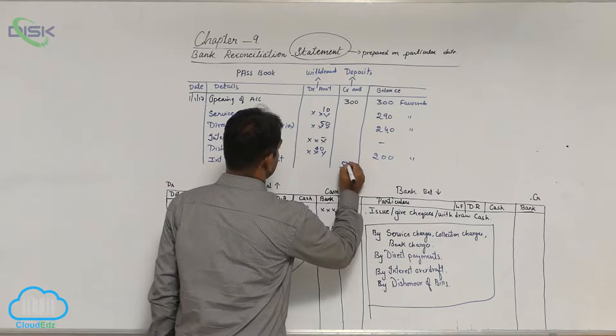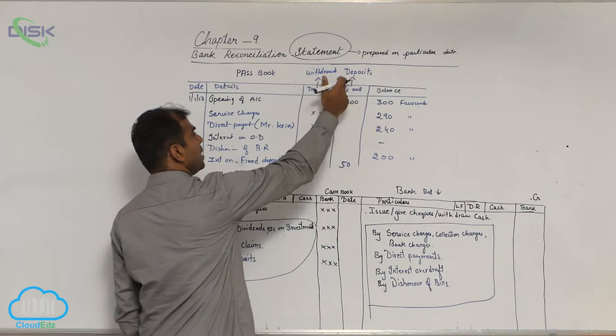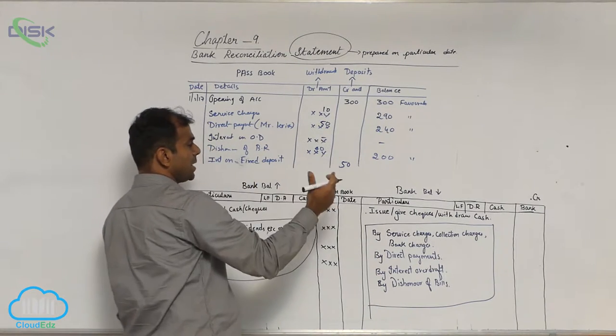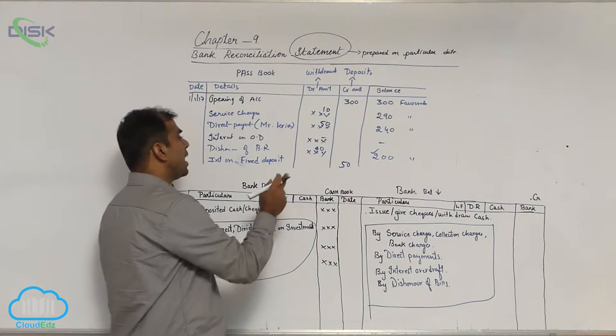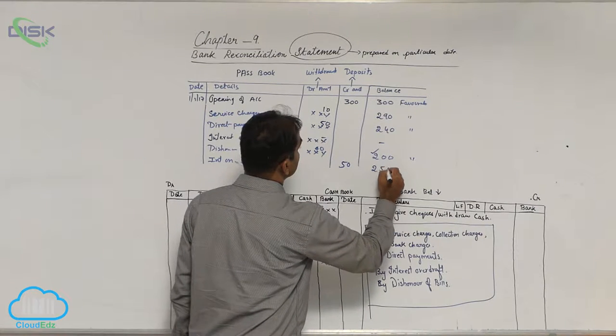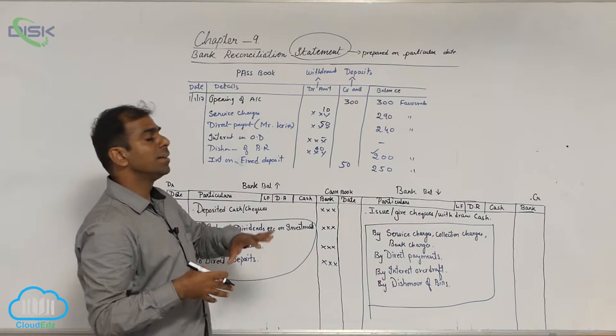50 being interest on fixed deposit, the bank will enter it in the deposit column. Because the bank has to give you that money, your bank balance has to increase. So previously 200 was your balance according to the bank. After the bank giving you interest of 50, it will make your balance as 250.